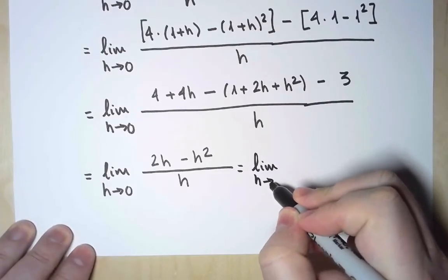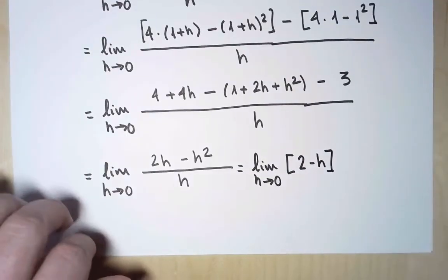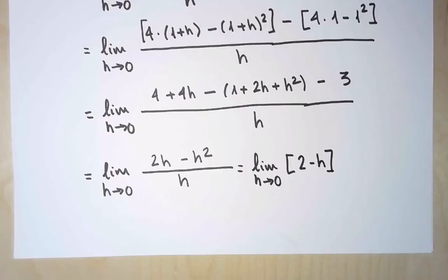Then group similar terms and simplify a bit, and now I can divide the numerator by h. How convenient! After all these simplifications, I am left with a continuous function.